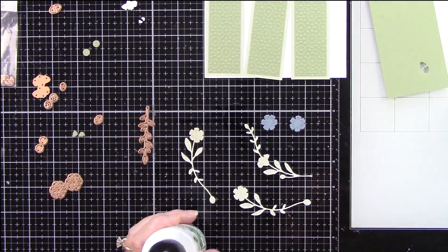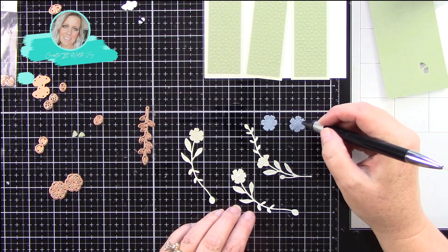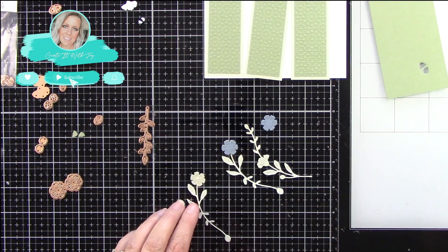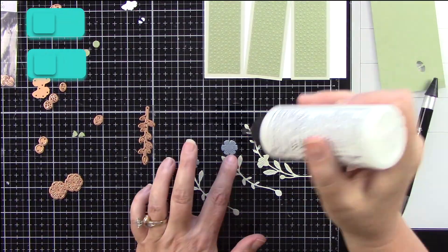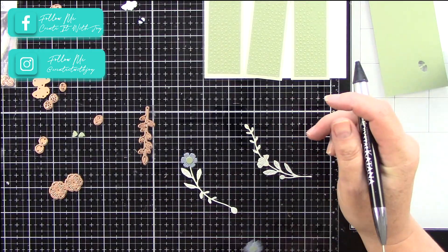Then I'm using Spellbinder's Wreath Builder Die but I'm not going to create a wreath. I have die cut it from the same light green cardstock. Then I brought in a blue cardstock and a white cardstock. I kept this very simple but I love the colors.